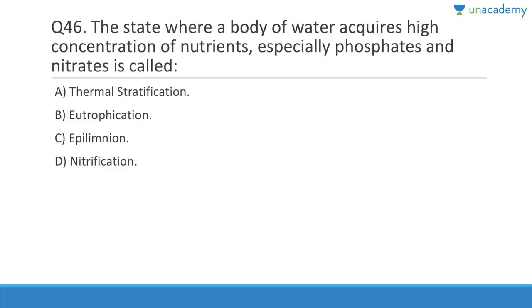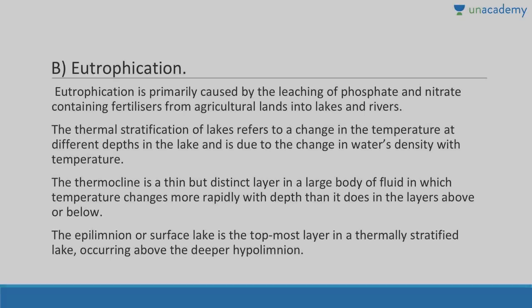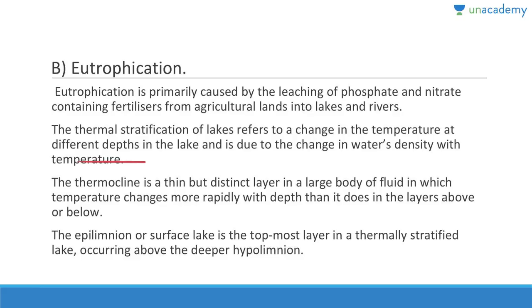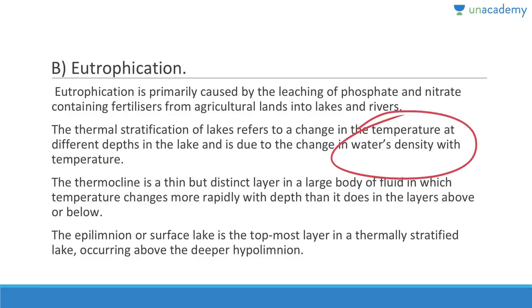Question forty-six: The state where a body of water acquires high concentration of nutrients, especially phosphates and nitrates, is called eutrophication. It happens with lakes and ponds and is caused by leaching of phosphate and nitrate-containing fertilizers from agricultural lands into water bodies. Thermal stratification of a lake refers to a change in temperature at different depths due to changes in water density with temperature.